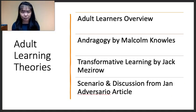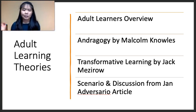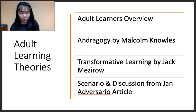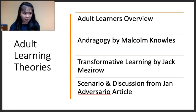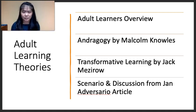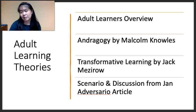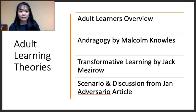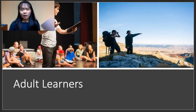Here's an overview of what we'll cover. We opened with a discussion on characteristics and possible motivations for adult learners, then we talked about andragogy — a specific set of principles and theories put out by Malcolm Knowles — and then we ran through transformative learning, which is a more holistic and interactive framework for learning, followed by a discussion based on some articles.